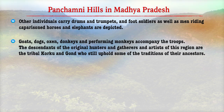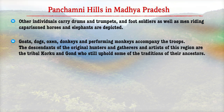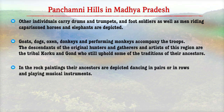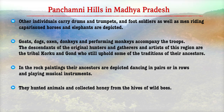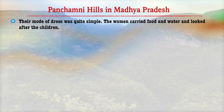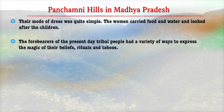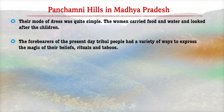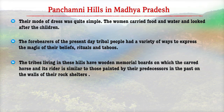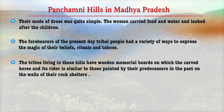Goats, dogs, oxen, donkeys and performing monkeys accompany the trip. The descendants of the original hunters, gatherers and artists of this region are the tribals Korku and Gond, who still uphold some of the traditions of their ancestors. In the long paintings, their ancestors are depicted dancing in pairs or in rows and playing musical instruments. They hunted animals and collected honey from the wild. The mode of dress was quite simple, the women carried food and water and looked after the children. The forebearers of the present-day tribal people had a variety of ways to express the magic of their beliefs, rituals and taboos.